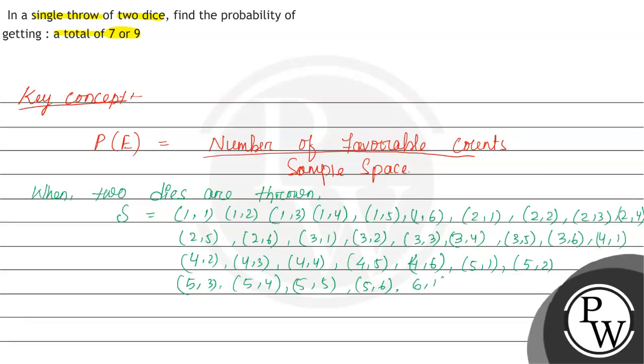Then (6,1), (6,2), (6,3), (6,4), (6,5), (6,6). So the sample space S will have 36 total outcomes.